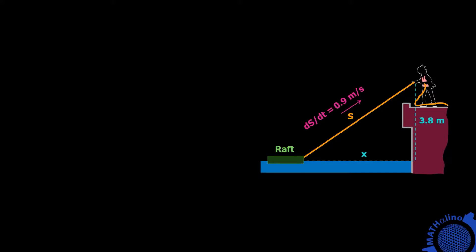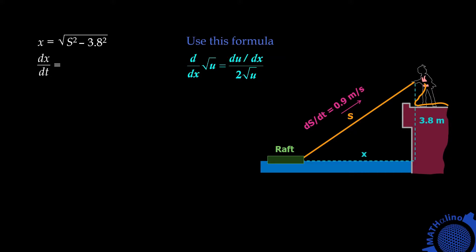Let us now do the calculation. From the right triangle, we can apply the Pythagorean Theorem. So x is equal to the square root of S squared minus 3.8 squared. To solve for dx over dt, we need this formula: the derivative of the square root of u is equal to du all over 2 times the square root of u. We are differentiating the right side with respect to t. So the derivative of that square root of S squared minus 3.8 squared is equal to 2S times ds over dt, all over 2 times the square root of S squared minus 3.8 squared. We can cancel out the 2, and dx over dt will vary according to the value of S. This equation represents the speed of the raft as it approaches the wharf.